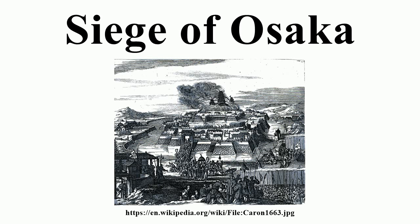Aftermath: Hideyori's son Toyotomi Kunimatsu was captured by the shogunate and beheaded in Kyoto. According to legend, before his beheading, little Kunimatsu bravely blamed Ieyasu for his betrayal and brutality against the Toyotomi clan. Nahime, daughter of Hideyori, was not sentenced to death and later became a nun at Kamakura's Tokoji. Hideyori's grave was destroyed by the shogunate, along with Kyoto's Toyokuni shrine. Chosokabe Morichika was beheaded on May 11, while his associate Ono Harunaga, who had been wanted for over 10 years, was killed on June 27. There are also records of pillaging and mass rapes by Tokugawa forces at the closing of the siege.